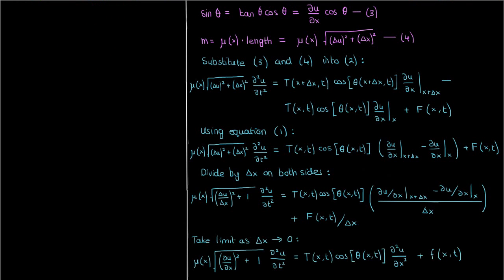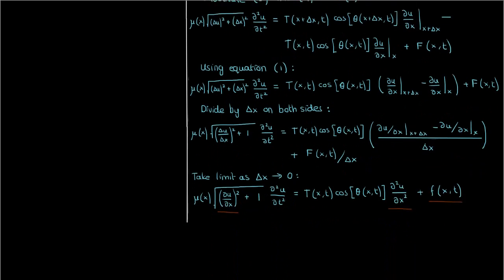This term on the left-hand side will just be the partial of u with respect to x, squared. This term on the right-hand side will now have the second partial derivative of u with respect to x. And this capital F over delta x can just be redefined as some external force per unit length, which I'll call small f.